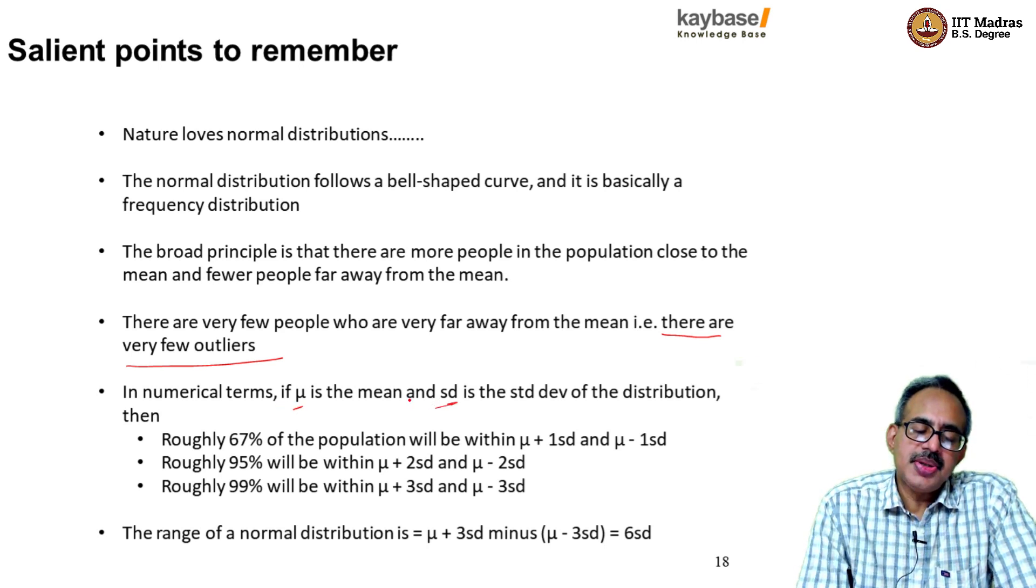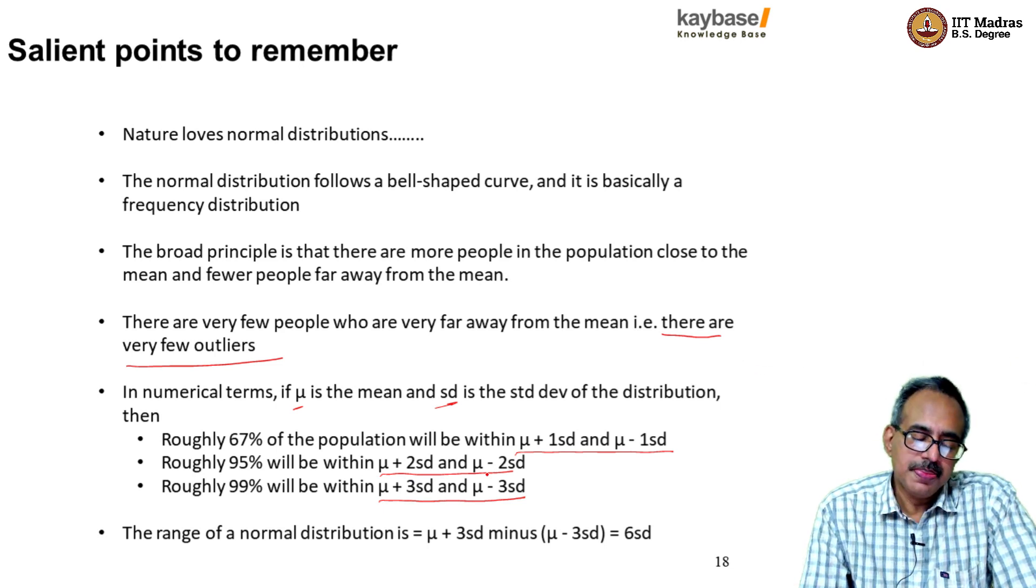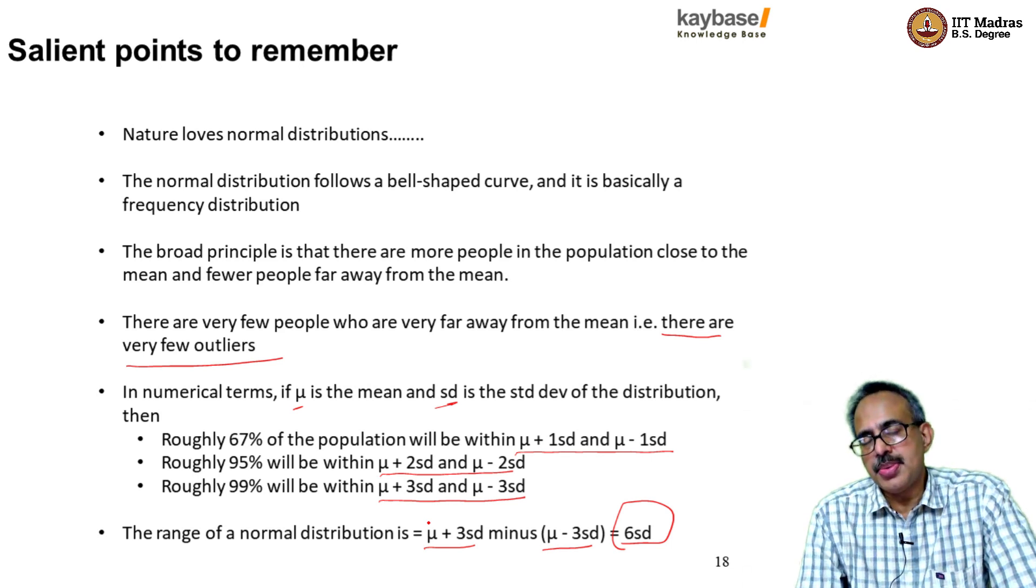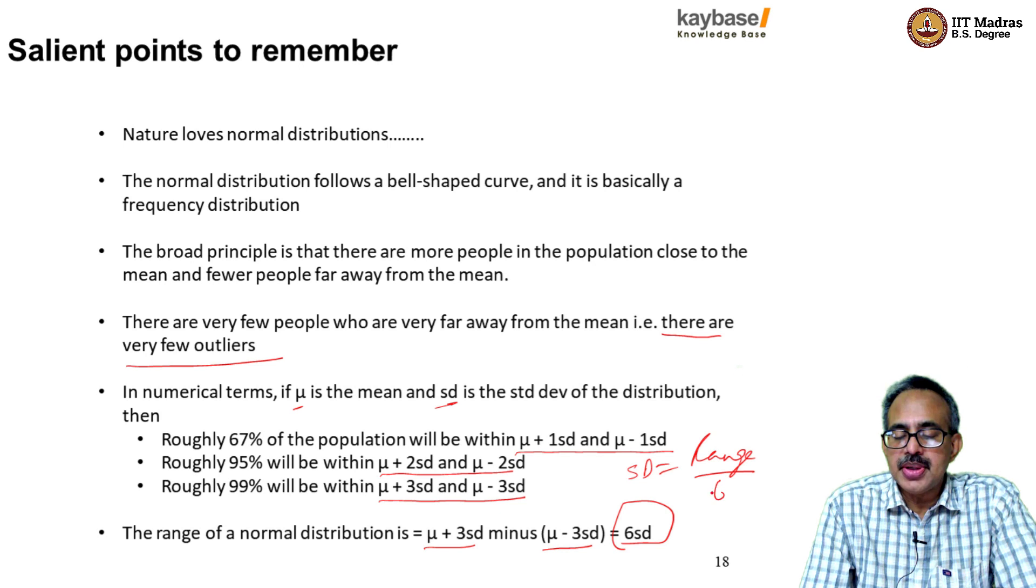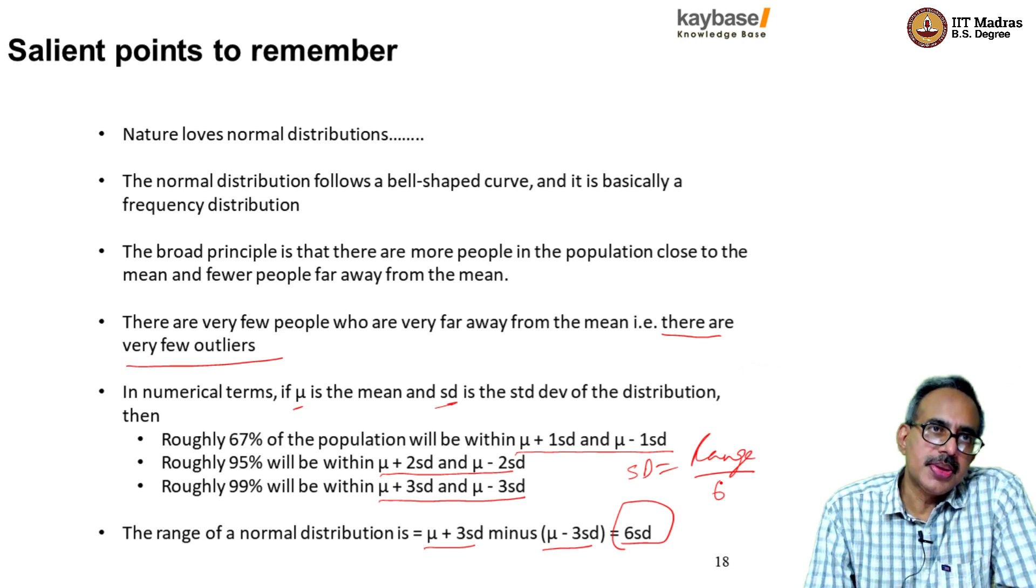So in numerical terms, if mu is the mean and if SD is the standard deviation in the distribution, roughly 67% of the population will be within mu plus or minus one standard deviation, roughly 95% will be within mu plus or minus two standard deviations, and 99% between mu plus or minus three standard deviations. So the range of a normal distribution is mu plus three minus mu minus three, and that gives us six standard deviations. So for the normal distribution, if we can calculate the range, then the standard deviation is simply equal to range by six, which is a fairly safe assumption to make. Is it clear?